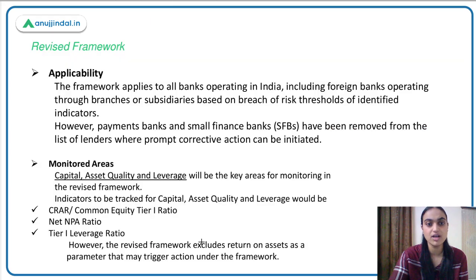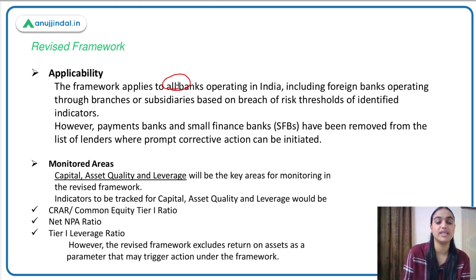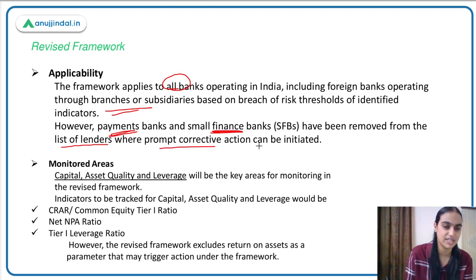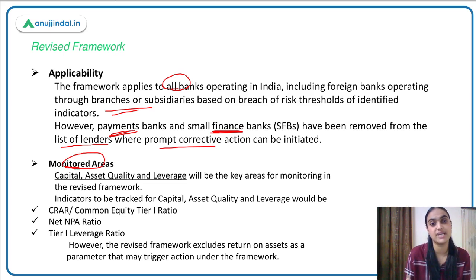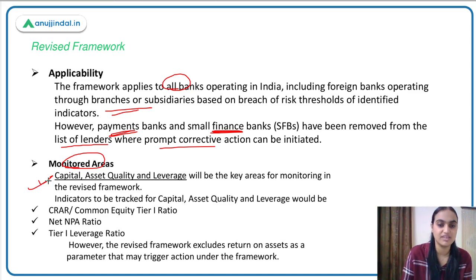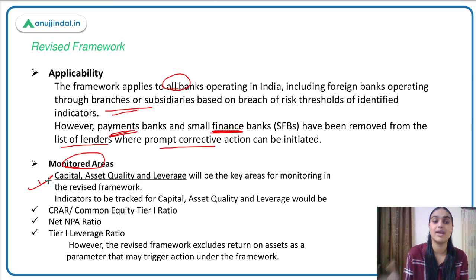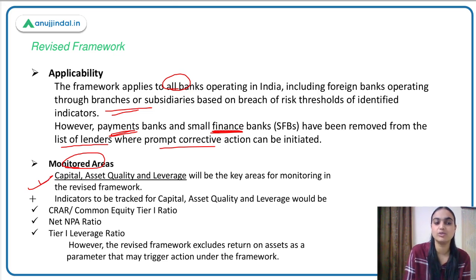The revised PCA framework is applicable to all banks operating in India, including Indian banks and foreign banks operating through branches or subsidiaries. Payment banks and small finance banks have been removed from the list of lenders on whom PCA can be initiated. The parameters based on which it's decided whether a bank's performance is good or weak are capital, asset quality, and leverage. These are assessed using four different ratios: CRAR, Common Equity Tier 1 (CET1) ratio, Net NPA ratio, and the Tier 1 leverage ratio.